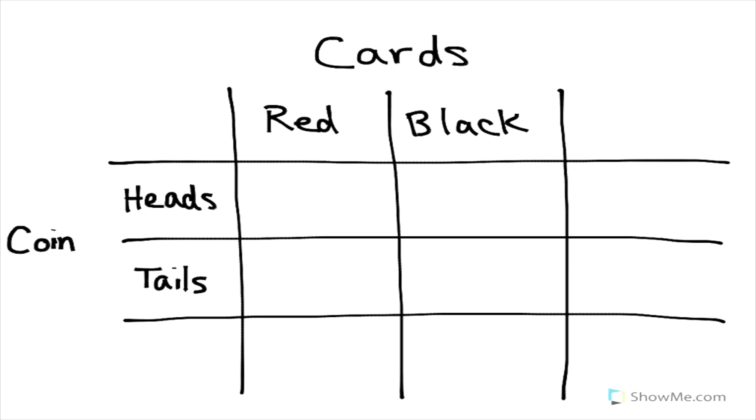So now we're going to look at two examples of how to calculate a conditional probability using a table. Here's the basic setup of our table. Our scenario is we're flipping a coin and drawing cards.